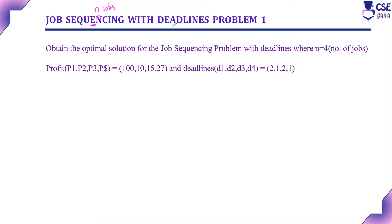I will provide the link in the description for your reference. Now in this session, we will implement the steps to solve the job sequencing problem with deadline with one example. The problem is: obtain the optimal solution for job sequencing problem with deadline where n is equal to 4, that is, the number of jobs given is 4.